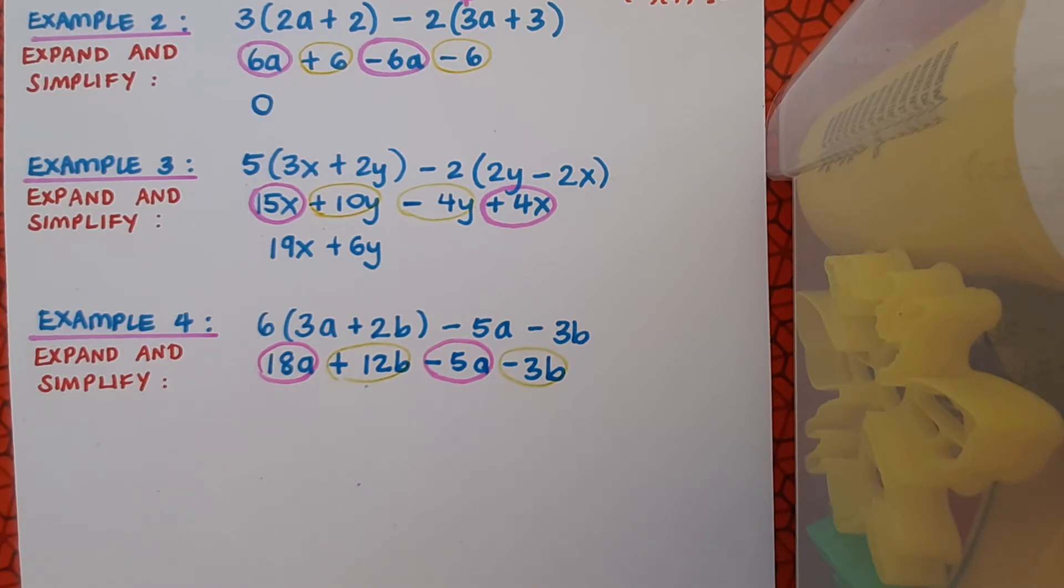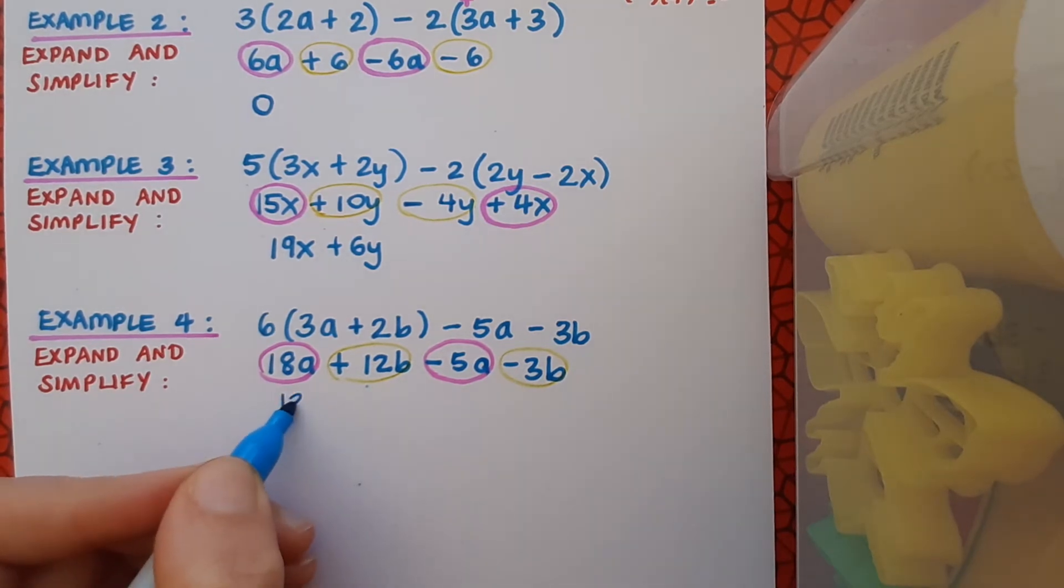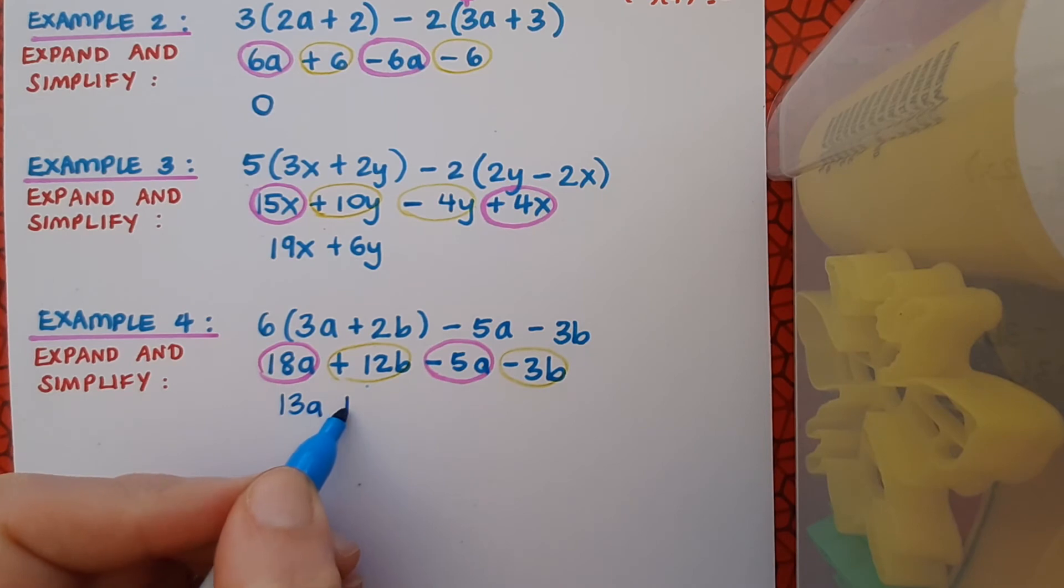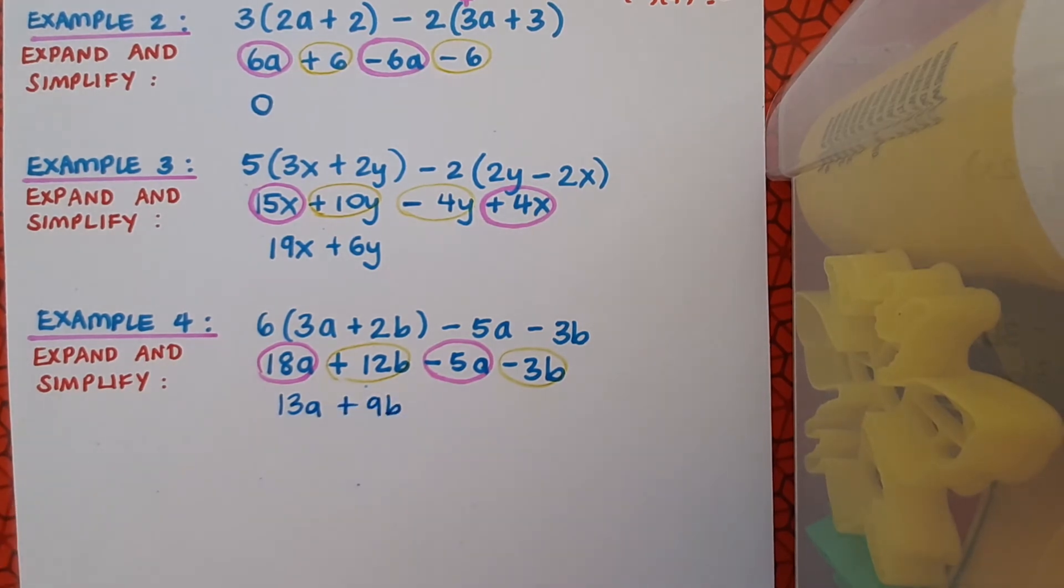Now let's pick out the like terms and finish off by simplifying. 18a minus 5a is going to give me 13a. And 12b minus 3b is going to give me plus 9b. And that's my final answer for example 4.